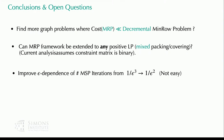The main open questions: find more problems where packing is cheaper than decremental. Can you improve the epsilon dependence of the MSP iteration from cube to square? That seems hard but seems doable. MSP works for packing or covering problems but doesn't work for general mixed packing-covering LPs — getting the speedup there is an interesting open question.